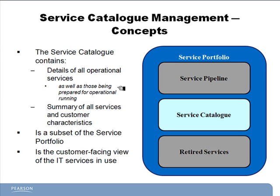In business language, think of these services like those IT services that are in the staging lane. They are fully built, documented, and ready to be deployed, but they're just awaiting their official go-live date. The Service Catalog is the only portion of the Service Portfolio that customers can see, because it's really the only portion that matters to them — just like when you go to a restaurant, the only thing you care about is what you can order right now. For the exam, you'll need to remember that the Service Catalog contains details of all operational services as well as those services being prepared for operational running.